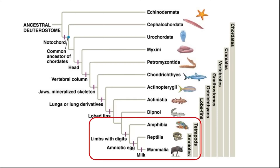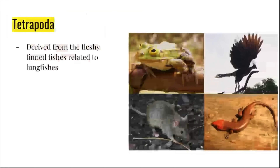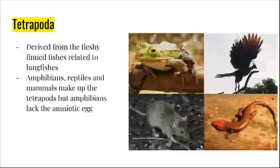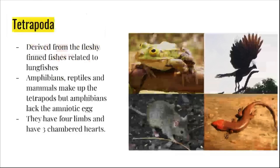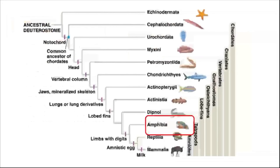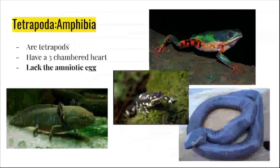The next group of chordates we'll discuss are the tetrapods. Tetrapods include several groups you're probably familiar with. Tetrapods derive their appendages from fleshy-finned fishes related to lungfish. Tetrapods include amphibians, reptiles, and mammals. Amphibians lack an amniotic egg. Tetrapods have four limbs and three-chambered hearts. On the bottom left is an axolotl, a species that once lived in the lake at the center of Mexico City. On the bottom right is a kind of amphibian called a caecilian. They're difficult to observe, live underground, and are pretty uncommon.